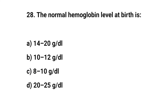Question number twenty-eight. A normal hemoglobin level at birth is? The right answer is A: 14 to 20 grams per deciliter.